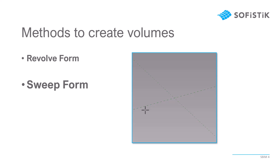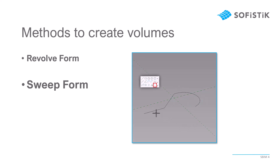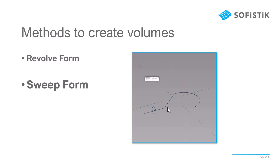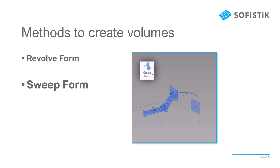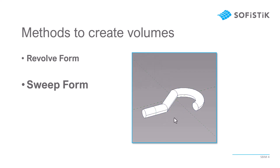Next up we have the sweep form. The sweep form is first based on a path that I defined here with two lines and then a curvature, on which I will then place a reference point to have a reference plane at the alignment. This can then be used to create something like, for example, a circle. This circle will now be a reference line as well as my path. Once I select them and click on Create Form, the program will recognize the path and create the volume accordingly.